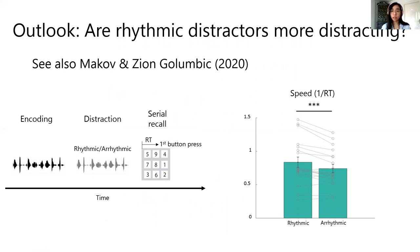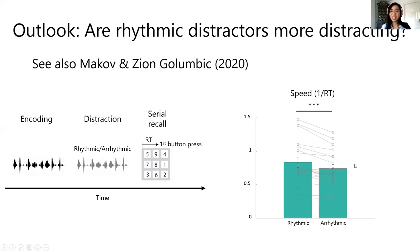We again used the irrelevant speech task. Participants were asked to remember the order of a digit sequence and then recall it later. What we manipulated was the rhythmicity of the distractors — whether the distractor was rhythmic or arrhythmic. We measured response time from when participants could respond to their first button press and converted it to speed. What we found is that participants answered faster in the rhythmic distractor condition compared to the arrhythmic condition. However, this is still a very preliminary study and we are doing follow-up experiments to further characterize the phenomenon.